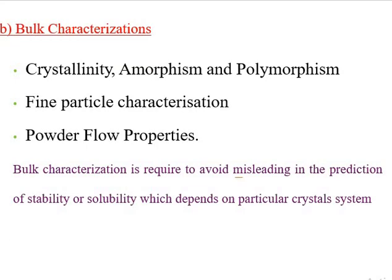The next physical property is bulk characterization. Under bulk characterization, we study crystallinity, amorphism, polymorphism, fine particle characterization, and powder flow properties. Bulk characterization is required to avoid misleading results in the production of stability or solubility, which depend on the particular crystal system. It involves characterization of various solid-state properties that could change during process development.